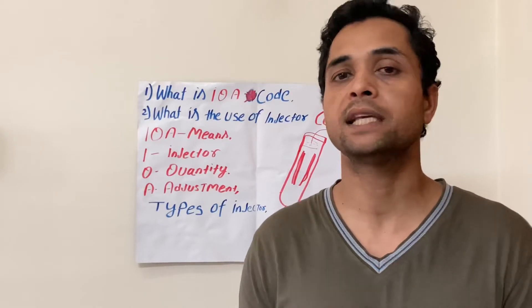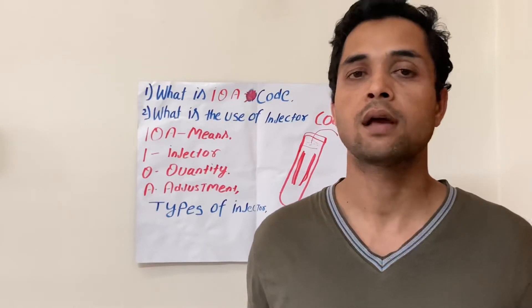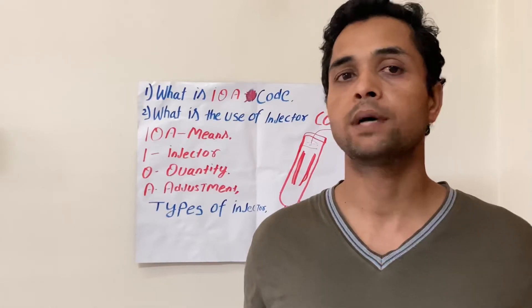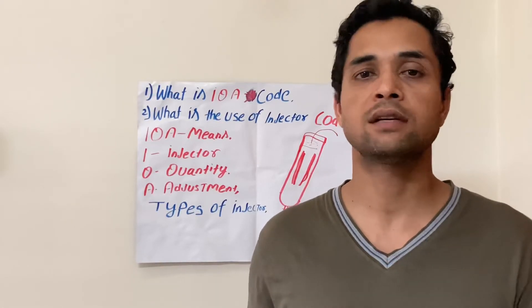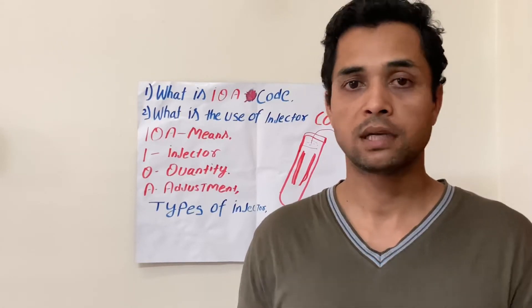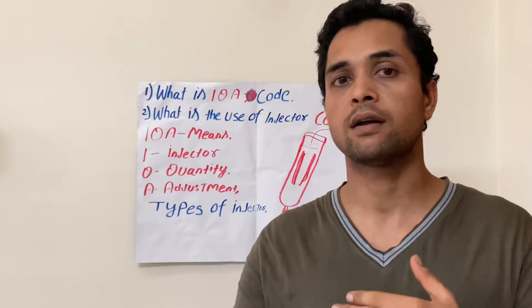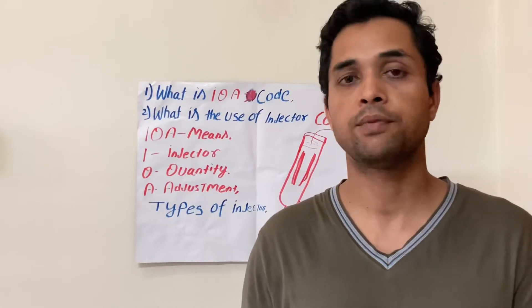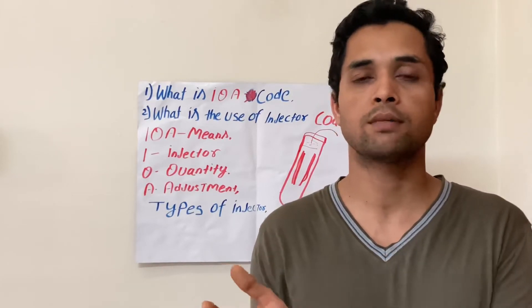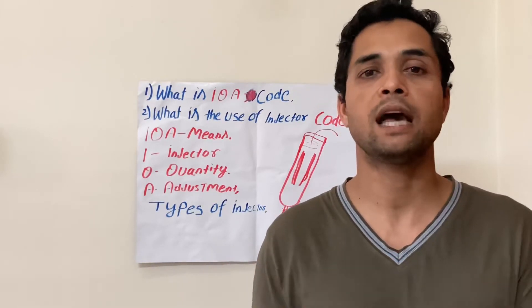After replacement of the engine control unit and fuel injector, or sometimes for checking purposes, we interchange injectors. Suppose cylinder one has a defective injector and we want to reconfirm. We will interchange number one with number four. At that time also, we have to enter the IQA code into the ECU.